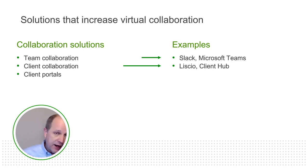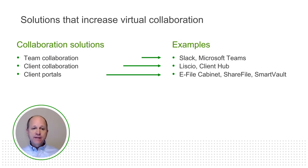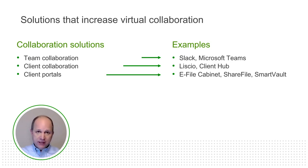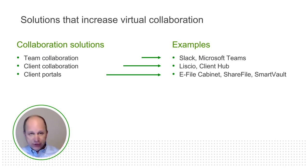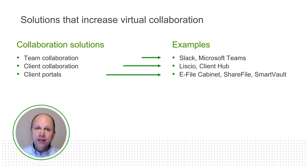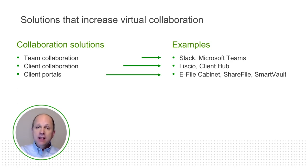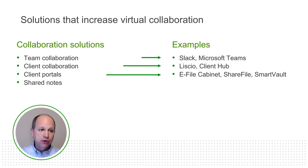Solutions like Liscio and Client Hub are point-to-point and cannot be hacked into with anything close to the ease of email. Then there are client portals — a category you might be more familiar with: eFileCabinet, ShareFile, and SmartVault. You place a link on your website, put it in your email signature, and clients can send files straight up to your portal, bypassing email. Typically, if you have a client collaboration solution, you don't also have a client portal, but some people choose to have both.